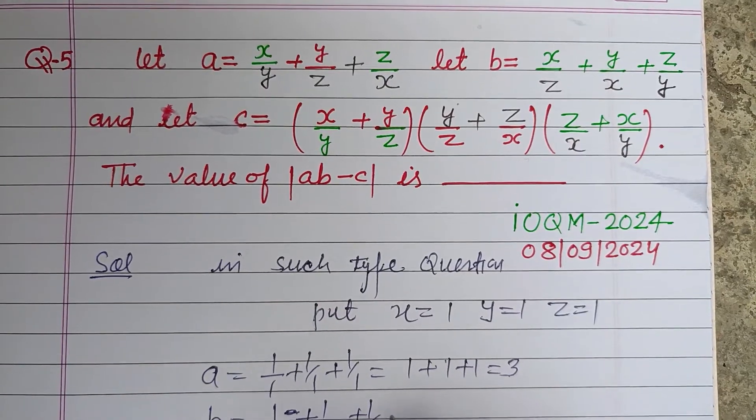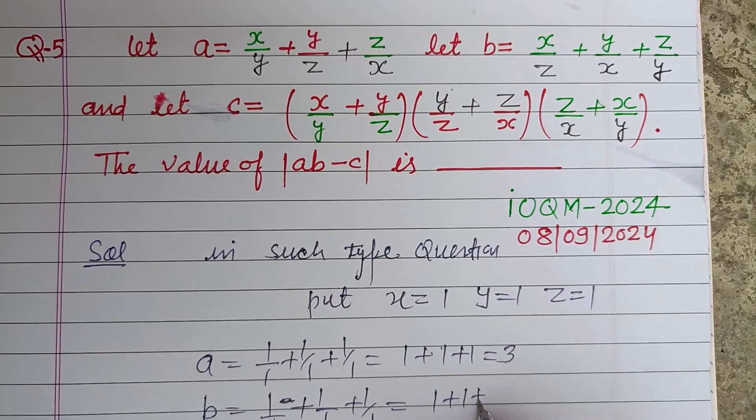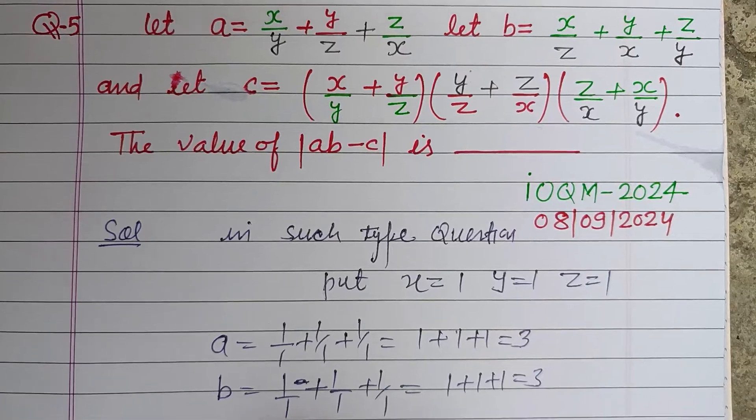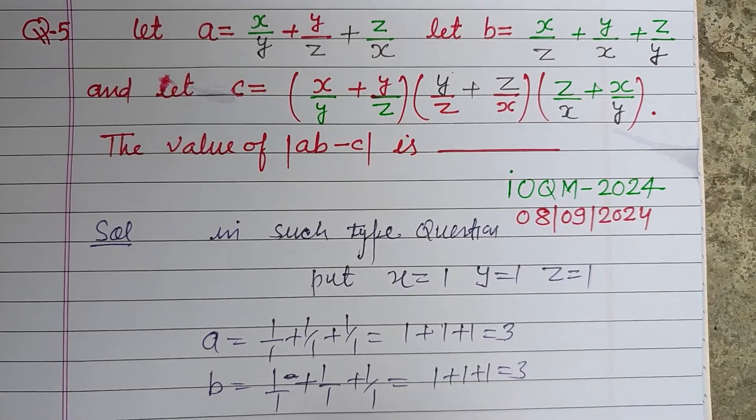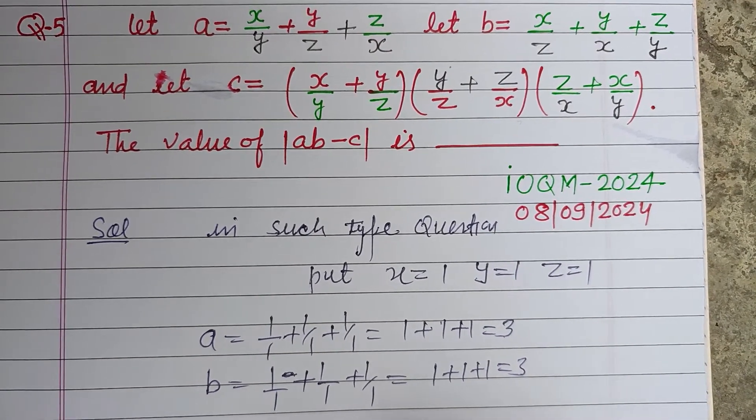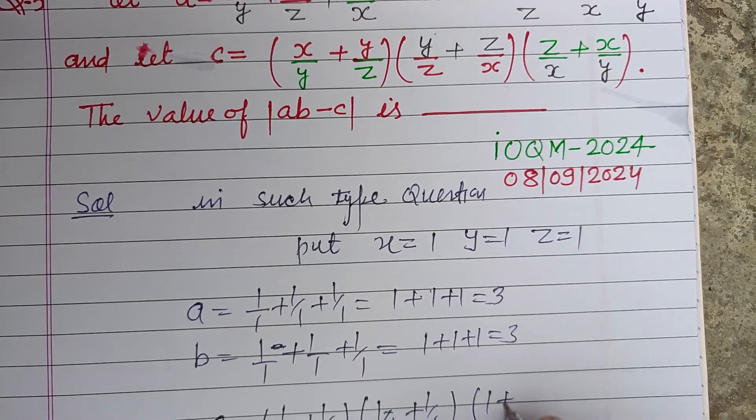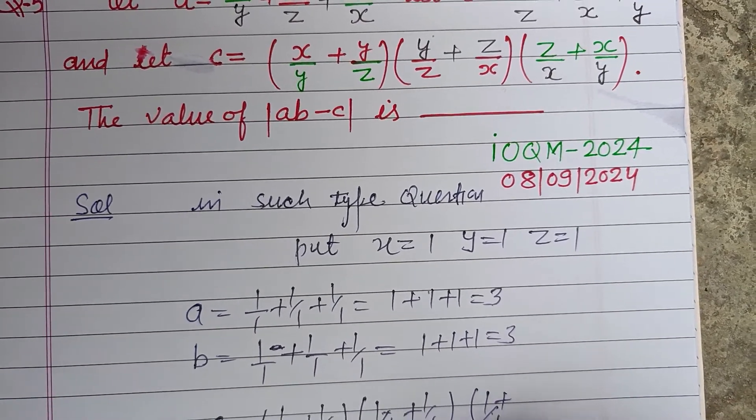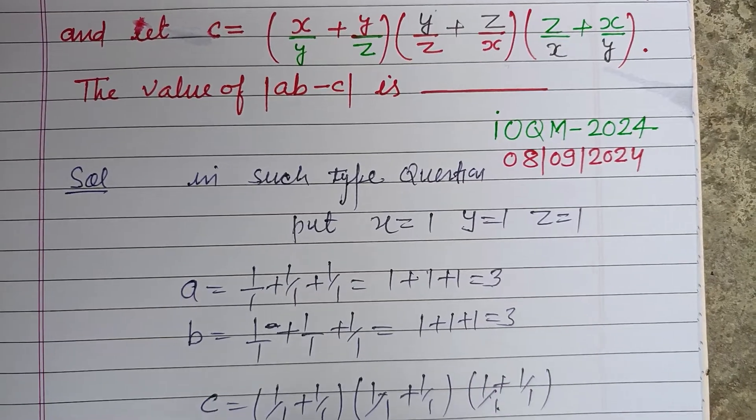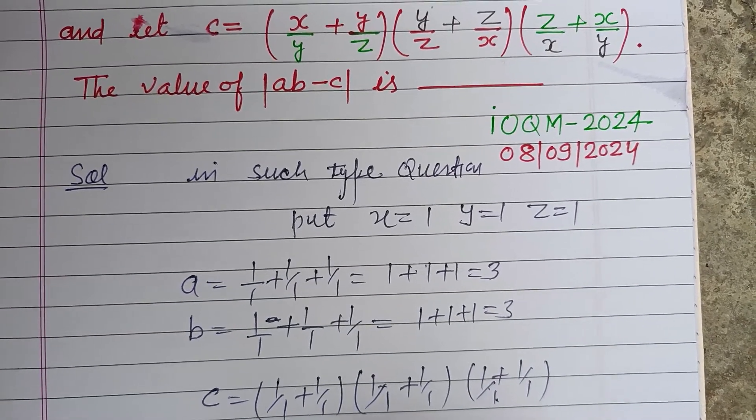And c equal to 1 over 1 plus 1 over 1, 1 over 1 plus 1 over 1, that is 2, 2 into 2 into 2, that is 8.